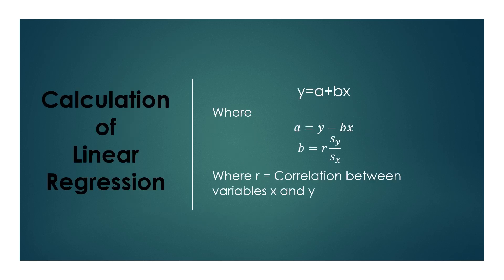For the calculation of linear regression using the formula y equals a plus bx: a equals mean of y minus b times mean of x, and b equals r times standard deviation of y divided by standard deviation of x, where r is the correlation between variables x and y. From this formula we can find out any value of y from a given value of x. You can use this formula manually if your data is not huge, but if your data is large you can use SPSS to perform linear regression analysis.